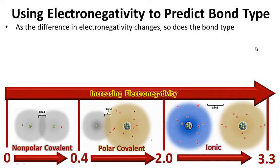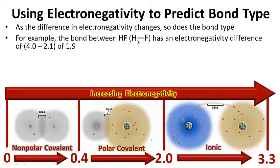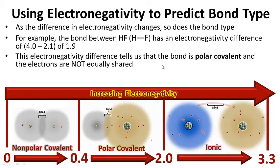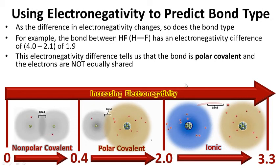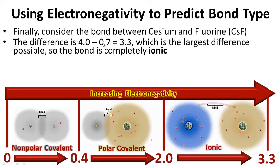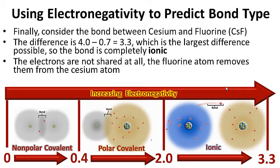As the difference in electronegativity changes, so does the bond type. For example, the bond between hydrogen and fluorine has an electronegativity difference of 4 minus 2.1, giving us 1.9 — just below 2. This tells us the bond is polar covalent and the electrons are not equally shared, placing us in the polar covalent range. Finally, consider the bond between cesium and fluorine: the difference is 4 minus 0.7, which is 3.3 — the largest difference possible — so the bond is completely ionic and the fluorine atom actually removes the electrons from the cesium atom.